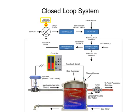The error detector compares the set point to the feedback signal and produces an output proportional to the difference between them. The error signal is the output of the error detector. If the feedback signal and set point are equal, the error signal is zero.